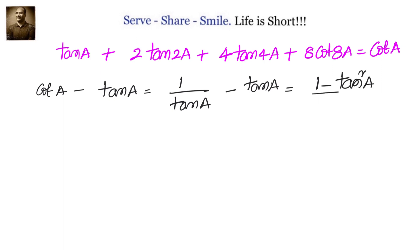We have cot a minus tan a, that is 1 by tan a minus tan a, which is 1 minus tan square a by tan a. Let's multiply with 2 in both numerator and denominator. It will become 2 into 1 minus tan square a divided by 2 tan a, which you know is nothing but equals to 2 divided by tan 2a, because we know tan 2a is 2 tan a by 1 minus tan square a.